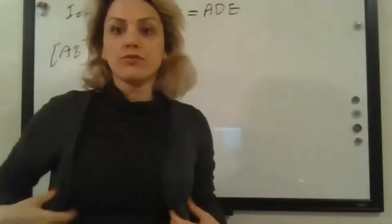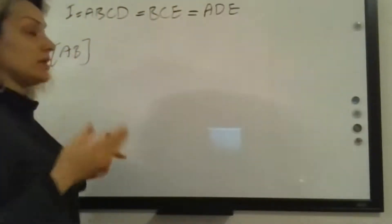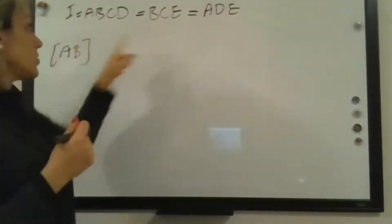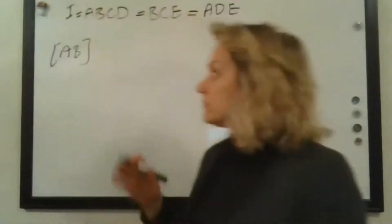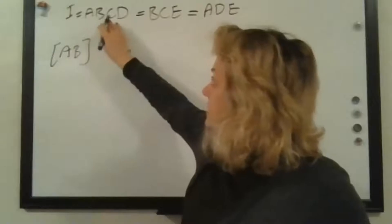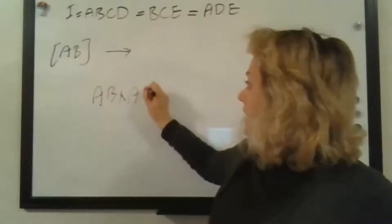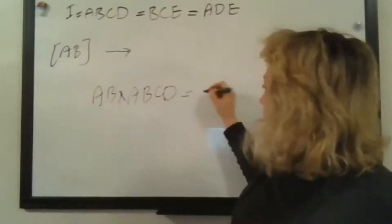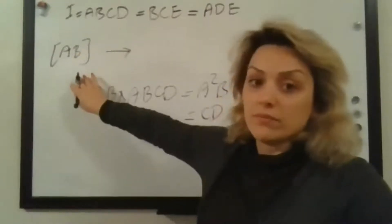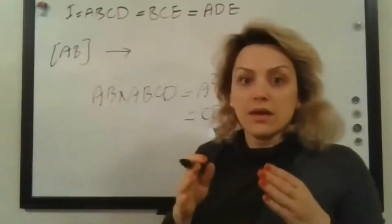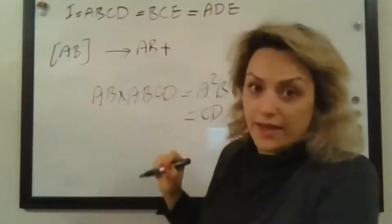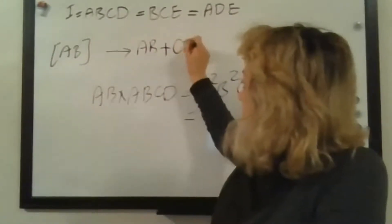We've been asked to find the confounding pattern for the AB interaction. What I'm going to do is multiply AB by each of these defining relation terms. With the first one: AB times ABCD gives A-squared B-squared CD, which equals CD. So when writing down the confounding pattern, I write AB first, then a plus sign, then CD. That's the first alias.